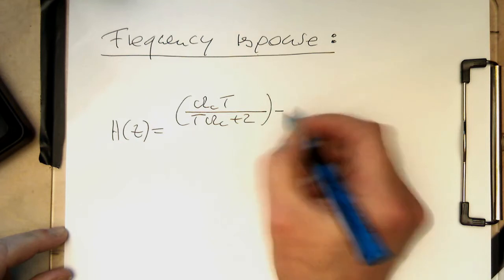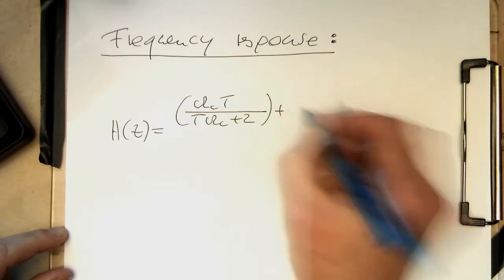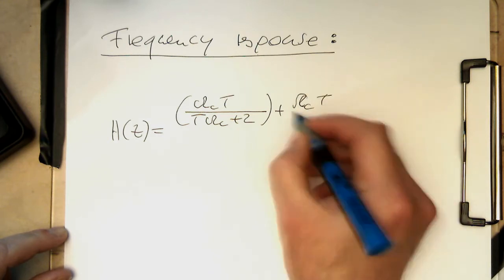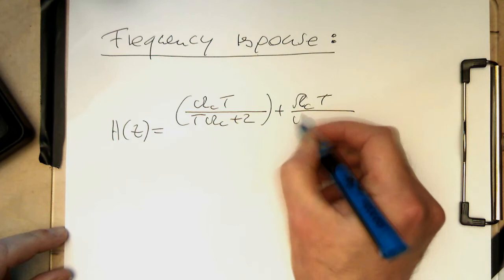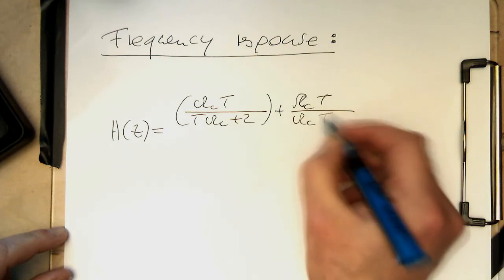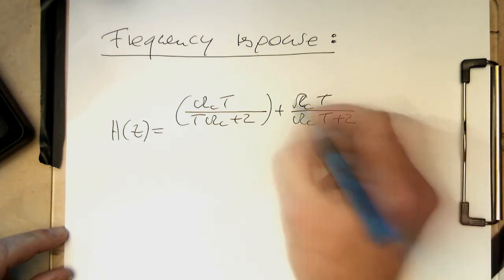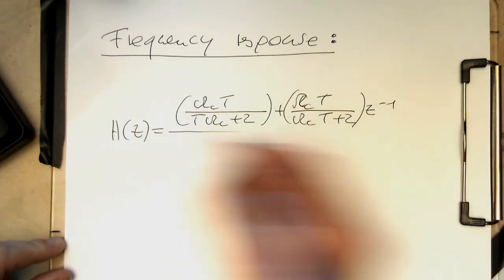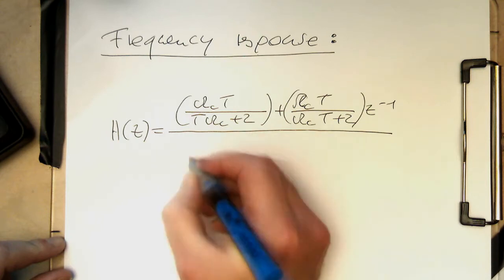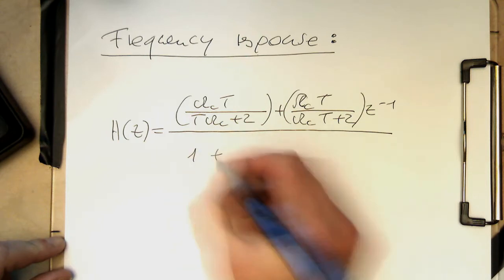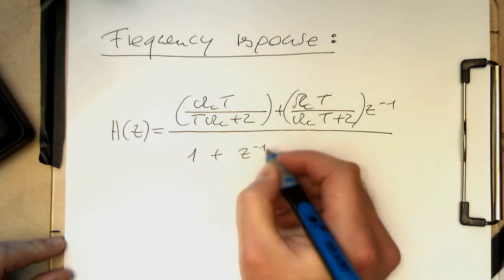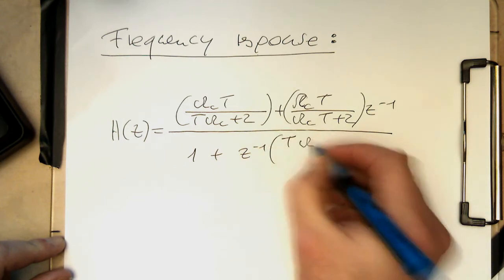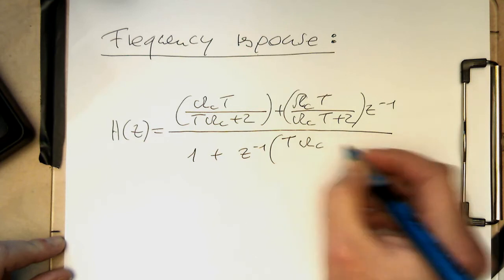And so then we have here, that's again the omega c T divided by omega c T plus 2, and then that's here z to minus 1. So except of having quite nasty coefficients here, that's essentially still something we can put in a second-order IIR filter.